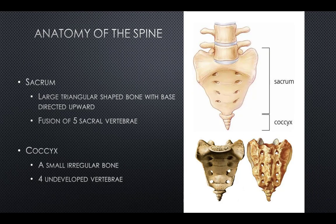The sacrum is the large triangular-shaped bone with the base directed upward, comprised of five fused sacral vertebrae. The coccyx is a small irregular-shaped bone that encompasses four underdeveloped vertebrae.